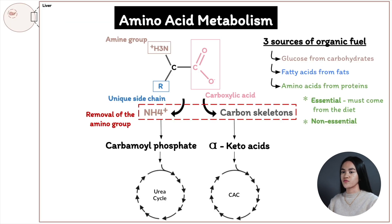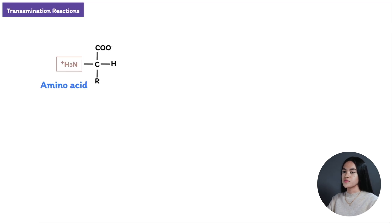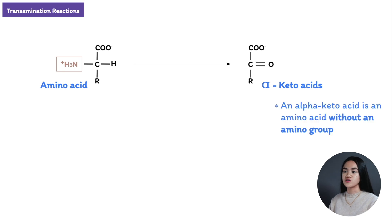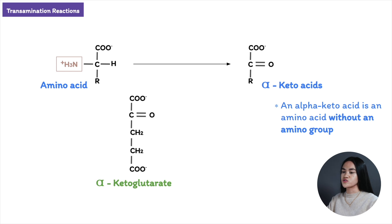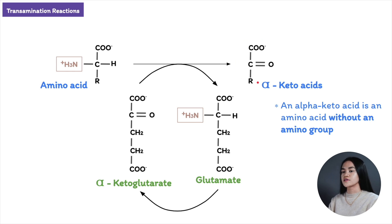So let's go back to the overview of amino acid catabolism and cover how the amino group is removed via the process called transamination, where we are just transferring the amino group. Now, ammonia is very toxic and causes severe damage and complications. Our amino acid transfers its amino group to become an alpha-keto acid, which is just an amino acid without an amino group. Alpha-ketoglutarate is going to accept the amino group and becomes glutamate. This is a reversible process where the amino acid becomes the carbon skeleton and alpha-ketoglutarate becomes glutamate.